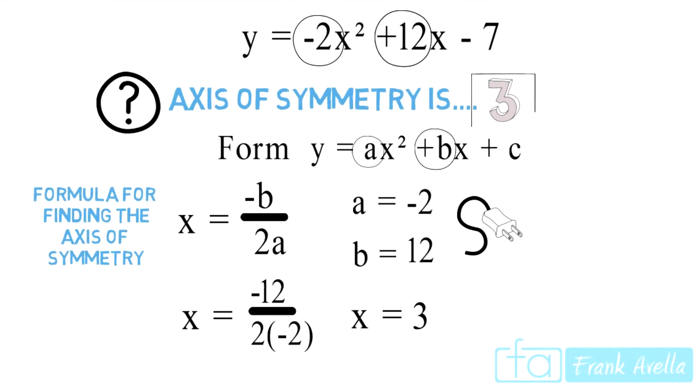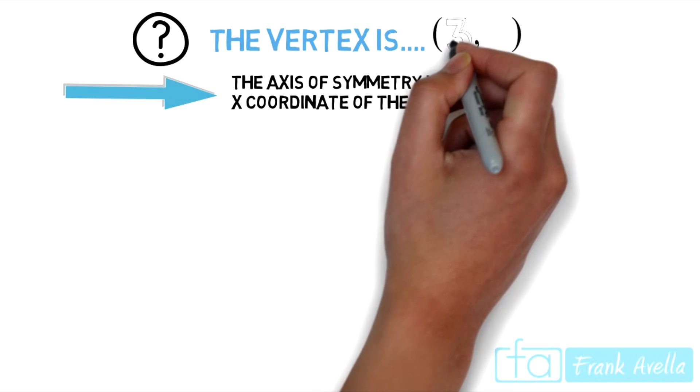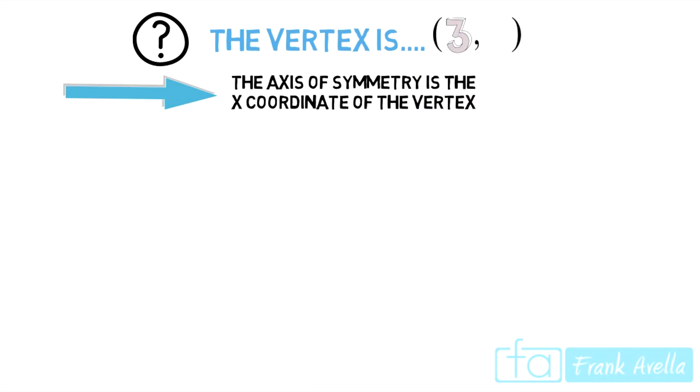As we see, our axis of symmetry that we solved for was 3, so all we're going to do is plug in the axis of symmetry into the x spot.